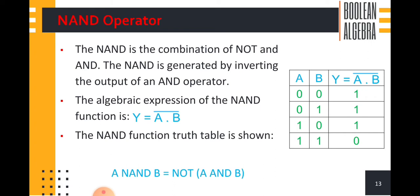We can express this as: A NAND B is equal to NOT of A AND B. Either we can write Y equal to A dot B whole bar, or we can write A NAND B equals NOT of A AND B. That is, inverting the output of AND operator is known as the NAND operator.